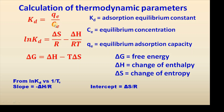First we need to calculate the Qe value for each temperature, then convert it to KD value, then convert to ln KD. We also need to convert temperature to Kelvin, then calculate 1/T. From the plot, if we plot ln KD versus 1/T, the slope will be minus ΔH by R and the intercept will be ΔS by R.